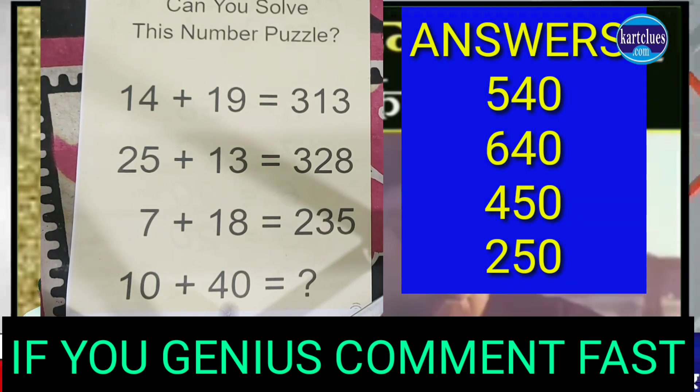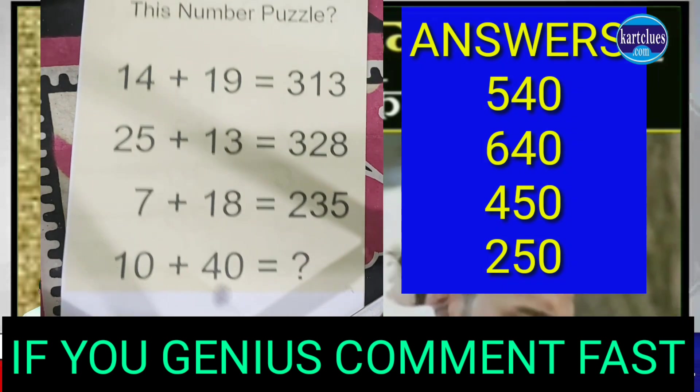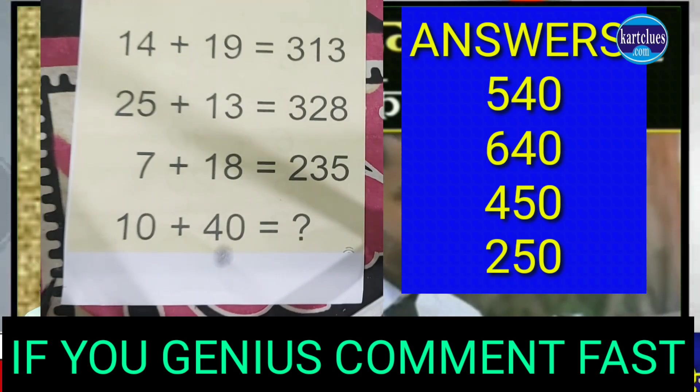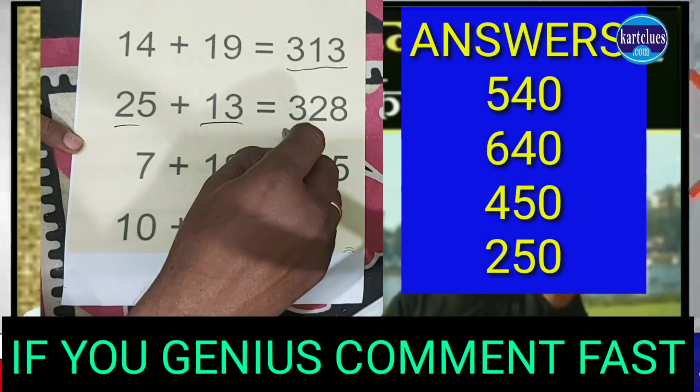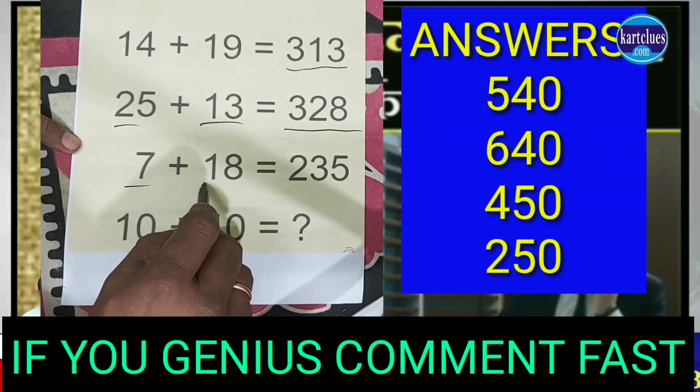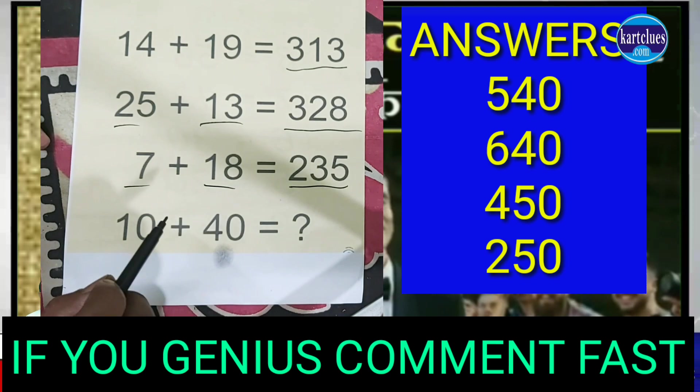failing - 99 percent of candidates fail to solve these questions. See the series: 14 + 19 = 313, 25 + 13 = 328, 7 + 18 = 235, and 10 + 40 = ? Just solve it.